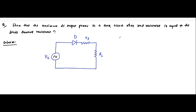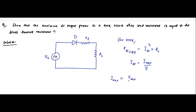For the half wave rectifier, it has been asked for the DC output power. We know that the DC output power is given by IDC squared into RL. IDC is equal to I_max by pi — the peak value of current divided by pi. We know that I_max is equal to V_max, the maximum value of the supply voltage, divided by RF plus RL. So IDC will be equal to I_max by pi, which equals V_max divided by pi into (RF plus RL).